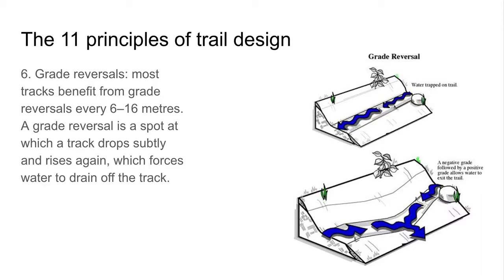Grade reversals. This deals with water and the trails' ability to shed excess water, and it also leads to more enjoyable trails. Making sure that our trails have a grade reversal — a subtle drop or rise in the trail — avoids water continuing down trails and causing gully erosion. The subtle rises and falls allow water to continue down the slope and drain away from our trails, leading to sustainable trails with minimal erosion. Grade reversals should occur every six to sixteen meters.